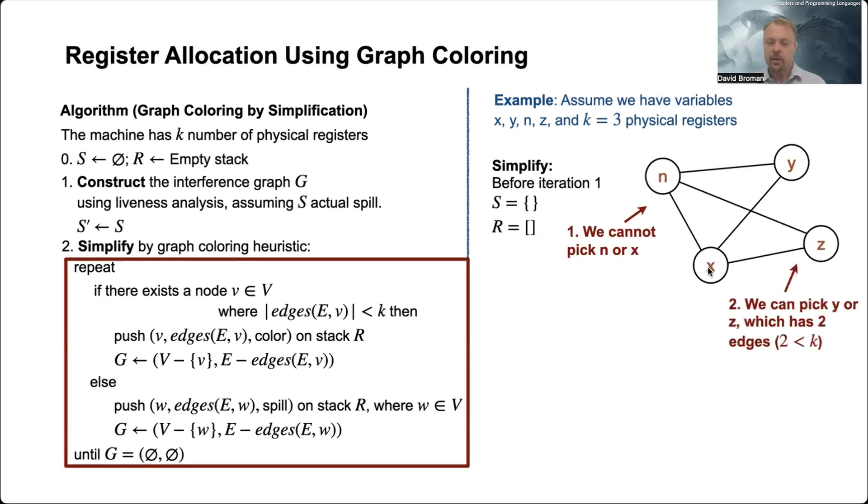All right, so we pick one of them. And let's say we can arbitrarily pick one - it might affect, but it's heuristic, so we don't know exactly the best way. So we pick one, and let's pick y. And after that iteration, we have still no spilling, so S is the empty set. But now we push this on R.